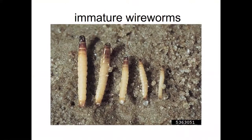Another pest of seedling soybeans would be the immature wireworms, the immature stage of click beetles. They can feed on soybeans when they're germinating.